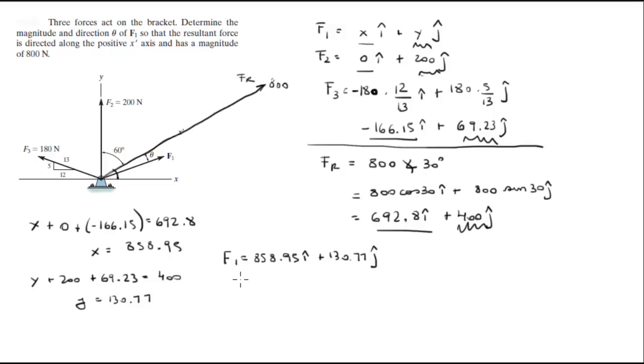Magnitude, easy. The magnitude of f1 can be found by doing the square root of x squared plus y squared, which we already found. When you plug those numbers in, this x and this y, you're going to get that the magnitude is 868.8.